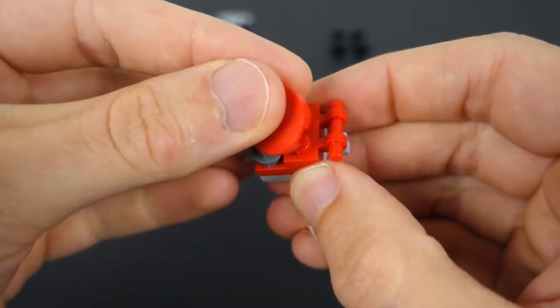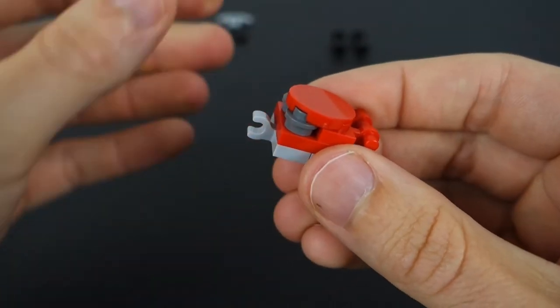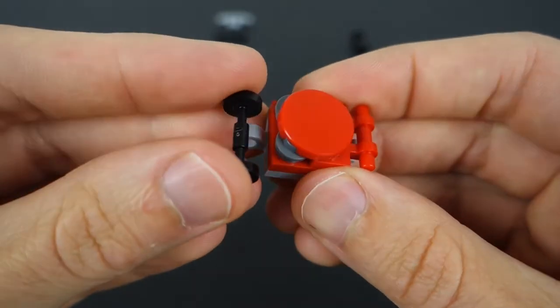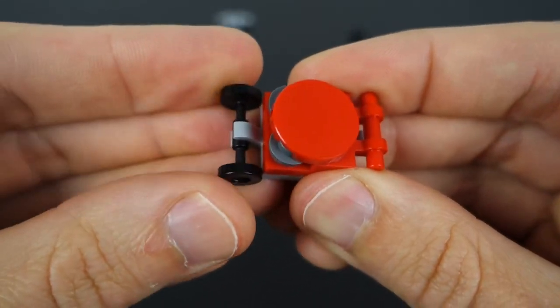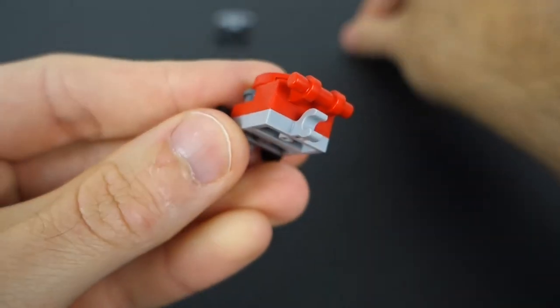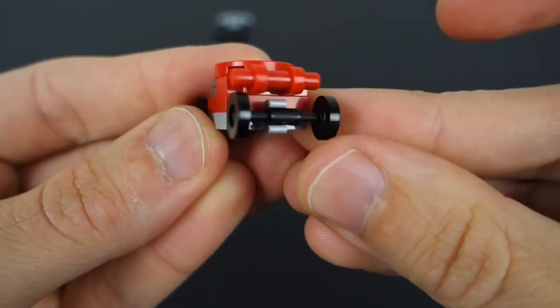Next we're going to put the top on the mower, just like that, and that will be followed by the wheels. We've got one for the front, and of course one for the back.